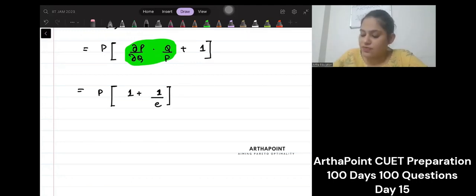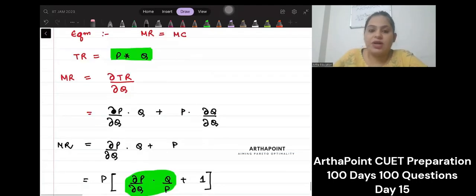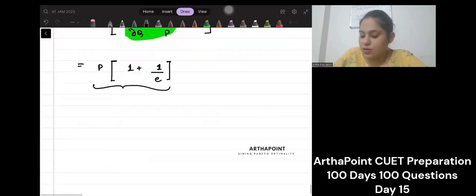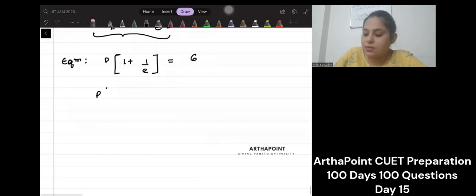Okay, so you have got the value of your MR that MR can be rewritten as this. Now my equilibrium says that this MR should be equal to MC. MC is 6. So P times 1 plus 1 by minus 2.5 should be equal to 6, right?